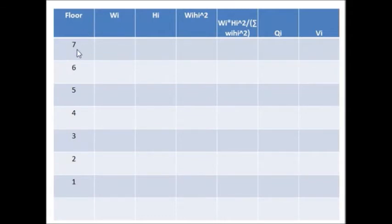Now, the second column is for Wi, which is the weight of each and every story. Then Hi is the height of story from the base, and so on. You can see the columns, and at the last we have to determine the story shear.